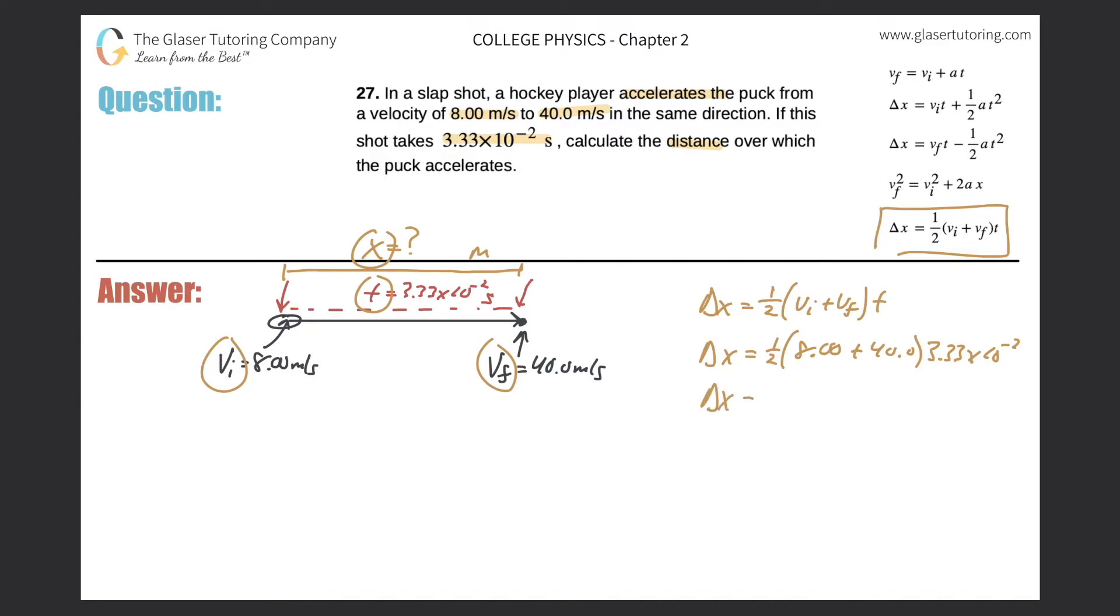So change in displacement is equal to one-half. When you add these two together, you get 48.0. Why? Because when you add the numbers together, the rules of sig figs say you can only go out to the tenths place here. This other number goes out to the hundredths place. So you have to choose the number with the least number of places. And then that'll be multiplied by 3.33 times 10 to the negative 2.